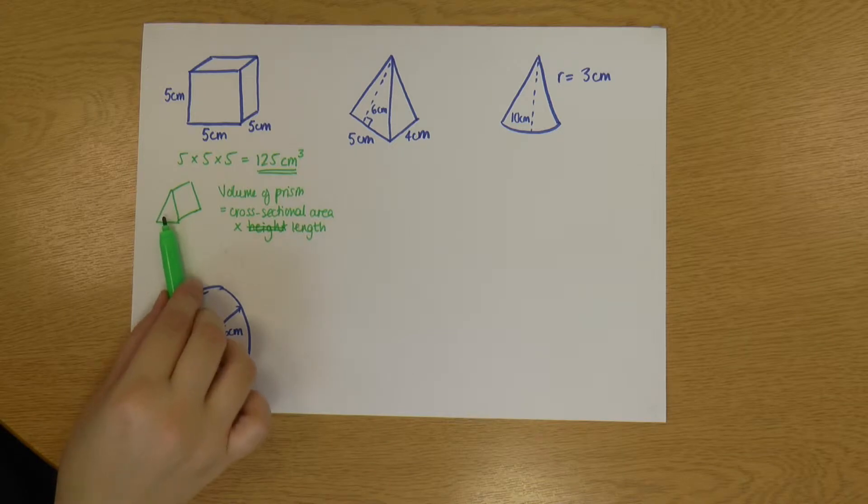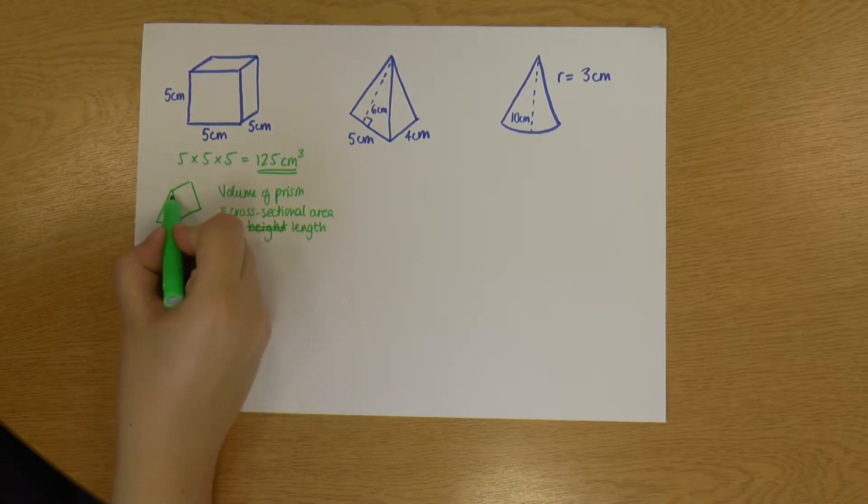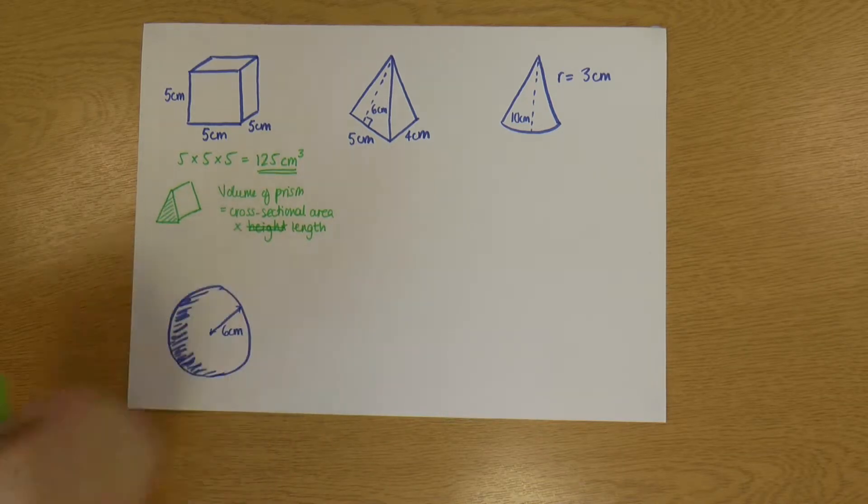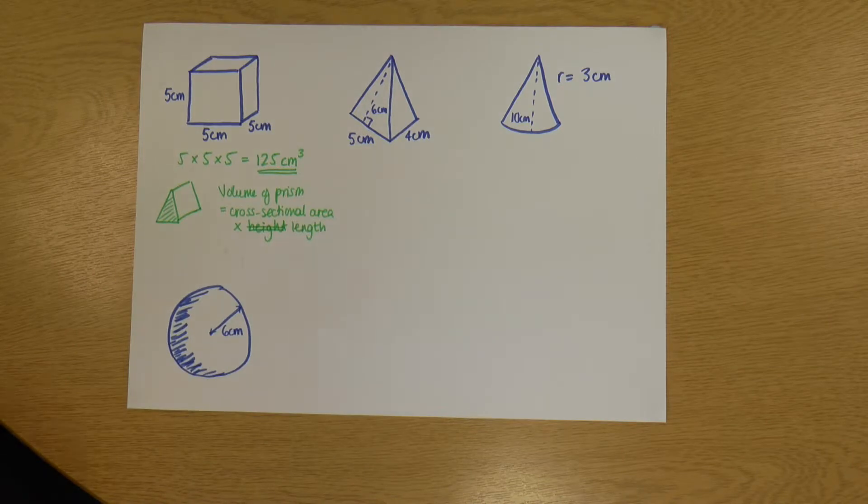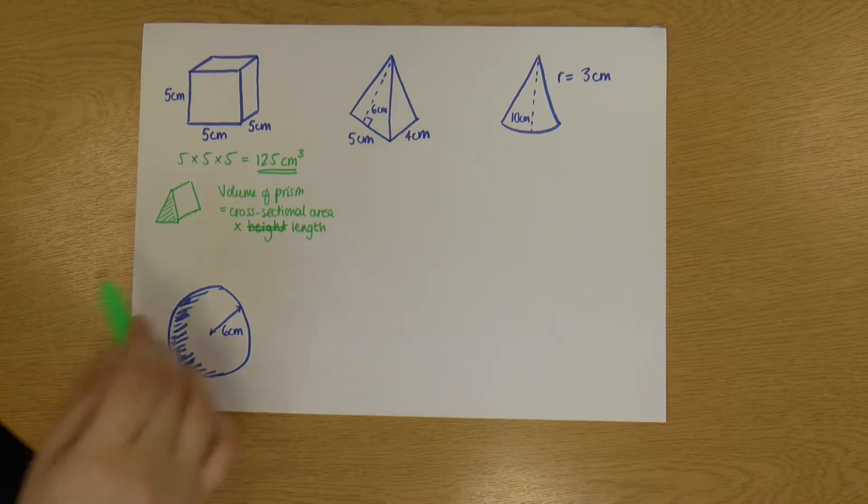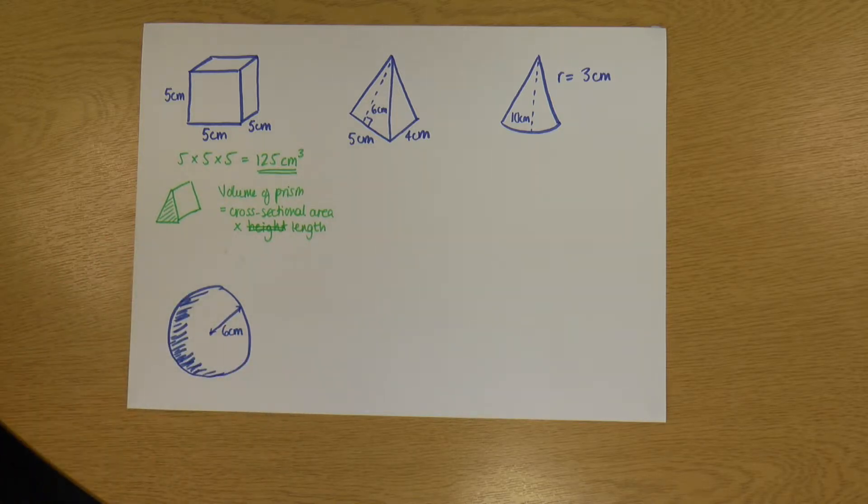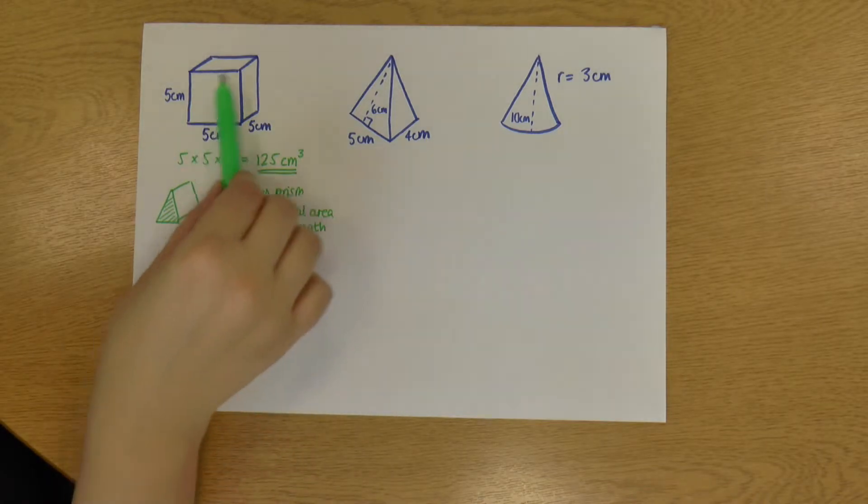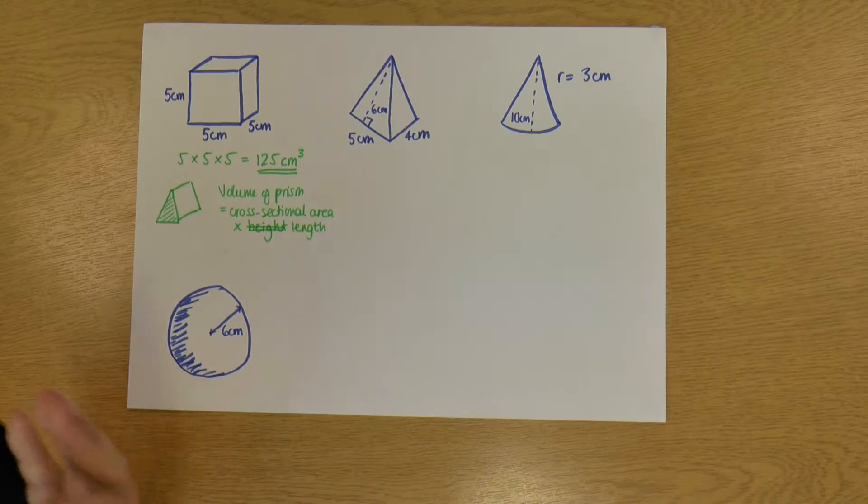So with a triangular prism, the cross-sectional area is the area of that triangle. So a cross-section is if I would take the shape and cut it like a loaf of bread. And the area would be of that exposed side. So taking my bread analogy again, it would be the white bit of the bread, not the crust.